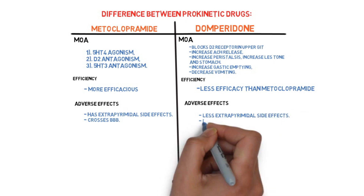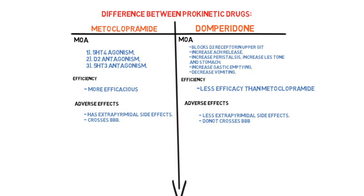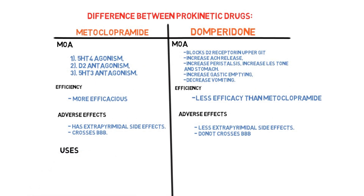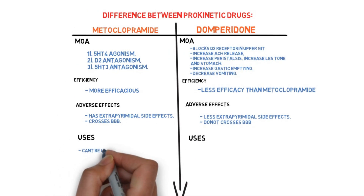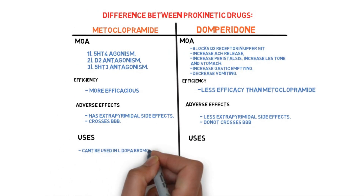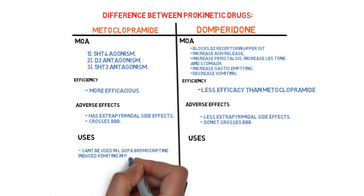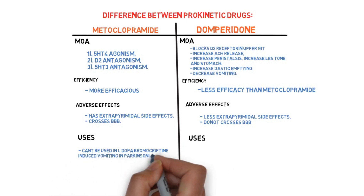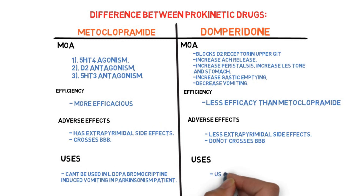Regarding uses: metoclopramide cannot be used in levodopa- or bromocriptine-induced vomiting in Parkinson's disease patients, whereas domperidone can be used in levodopa-induced vomiting in Parkinson's disease patients.